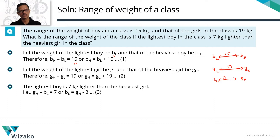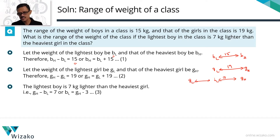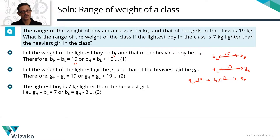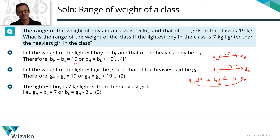Let's combine all three pieces of information. Start with the heaviest girl and the lightest boy — the gap is 7 kg. The lightest girl is 19 kg to the left of the heaviest girl. Since the lightest boy is only 7 kg to the left of the heaviest girl, the lightest girl goes even further left. So the ascending order so far is: lightest girl, lightest boy, heaviest girl. The total gap from lightest girl to heaviest girl is 19, of which 7 is bridged between the lightest boy and the heaviest girl — so the gap between the lightest girl and the lightest boy is the remaining 12.